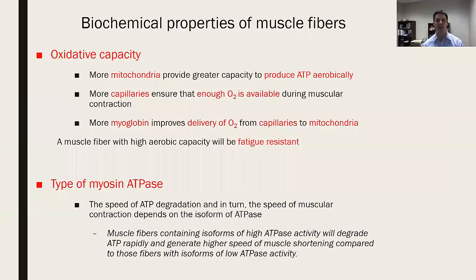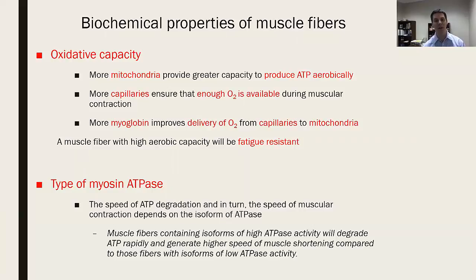We now have much better techniques. When I talk about biochemical properties, there are two main factors. The first is oxidative capacity — essentially the ability of mitochondria to produce ATP using oxygen. This will be a big focus as we move into the metabolism section. For now, if a skeletal muscle has a lot of mitochondria, that means it's able to generate a lot of ATP by using oxygen as the final electron acceptor.